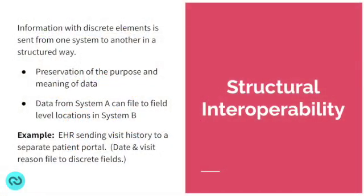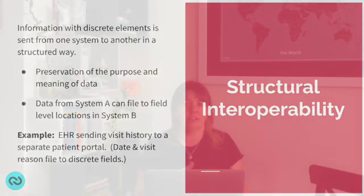Our second type is structural interoperability. With structural interoperability, the data has discrete elements when it's sent from system A to system B, so that system B has the ability to file the data in targeted fields or specific places. This type of exchange actually preserves the purpose and meaning of the data, because you have some understanding about what the intent of the discrete fields is. An example would be a hospital-based EHR sending visit history information over to a patient portal, where the message structure is defined so that the date of the visit, the location, and the visit reason are filed into discrete fields in the receiving system.